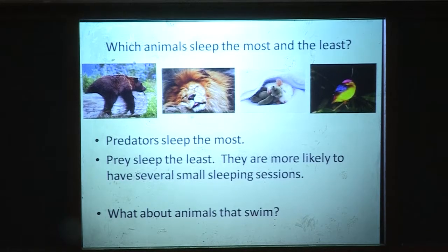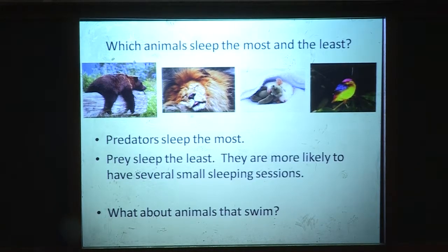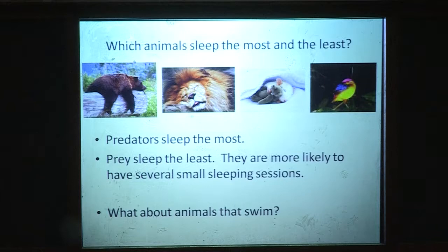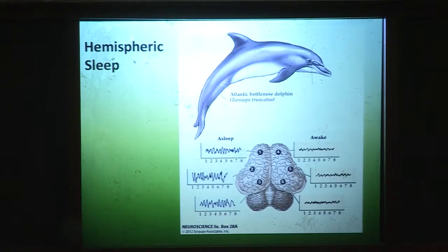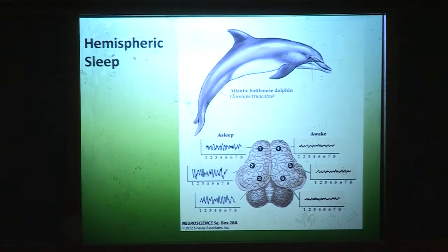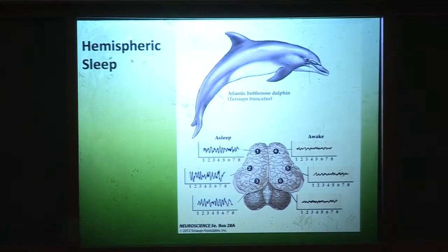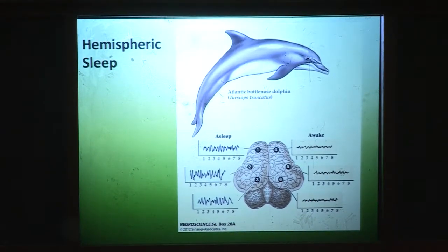Which animals sleep the most and which the least? Basically, if you're a predator, you get to sleep more — which makes sense, because prey animals have to watch out for things. Prey animals may sleep only a few minutes with perhaps half a minute to a minute and a half of dreaming time. Animals that swim face a different challenge: dolphins have handled this by having hemispheric sleep, where actually half of their brain is asleep and the other half is awake, allowing restorative time while still functioning.